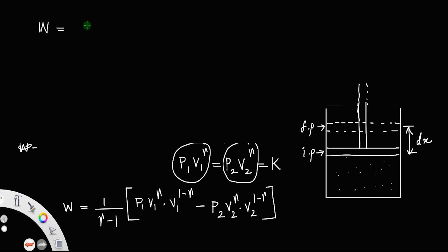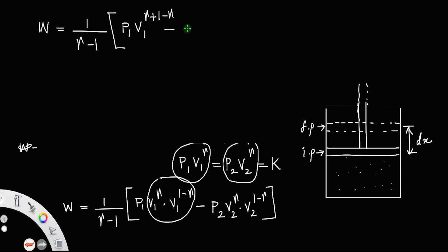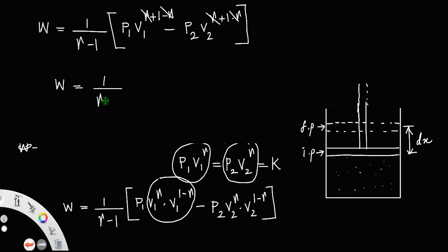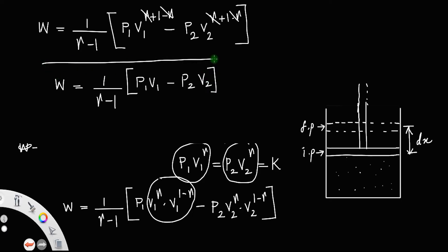W equals 1 by gamma minus 1 into P1 into V1 raised to gamma plus 1 minus gamma, minus P2 V2 raised to gamma plus 1 minus gamma. The gamma terms cancel in each, so W equals 1 by gamma minus 1 into P1 V1 minus P2 V2. This is the work done in an adiabatic process.